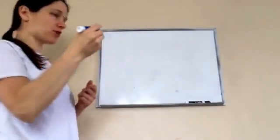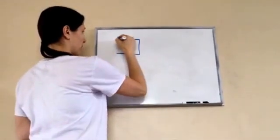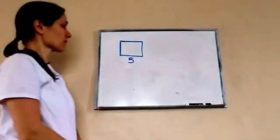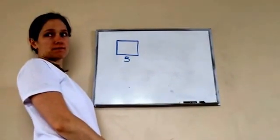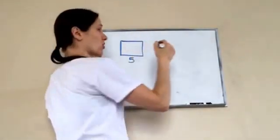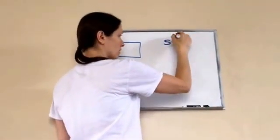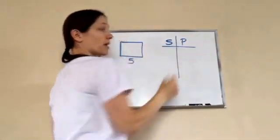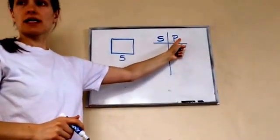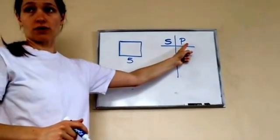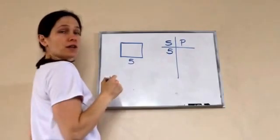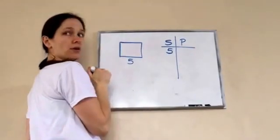First thing I'm going to draw on my paper is a square. What if I told you that each of these sides were 5? What would my perimeter be? 20. Yes, 20.